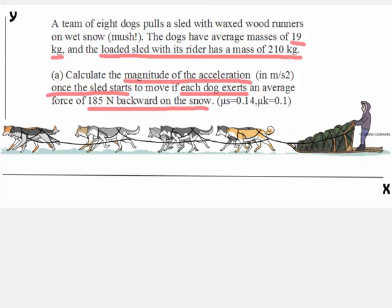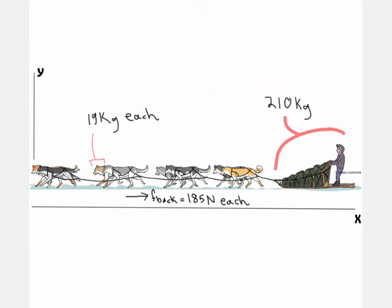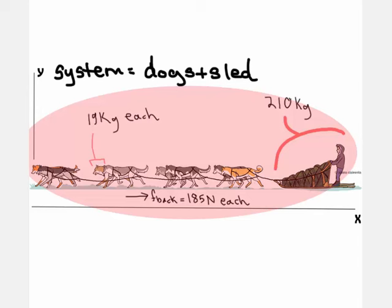Let's picture the situation. We have 8 sled dogs pulling the loaded sled forwards. Let's work with symbols first. Before starting the problem, we need to define our system. This would be the sled dogs and the loaded sled. They are moving together as one object.